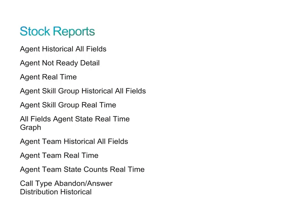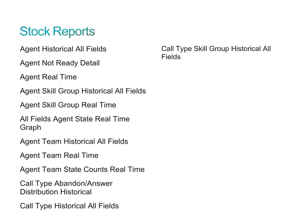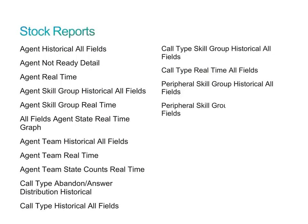The Call Type Abandoned Answer Distribution Historical report lists the number of answered and abandoned calls for separate intervals for the report's time period broken out into summaries. The Call Type Historical All Fields report displays the status of call types for the selected time period. The Call Type Skill Group Historical All Fields report shows the interval status of skill groups by call type. The Call Type Real-time All Fields report lists the current status of call types. The Peripheral Skill Group Historical All Fields report includes consolidated call and skill group statistics gathered in interval increments. The Peripheral Skill Group Real-time All Fields report lists the current status of selected skill groups.